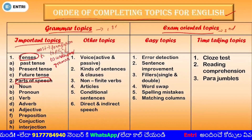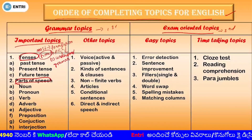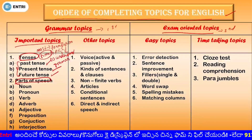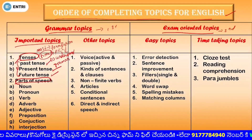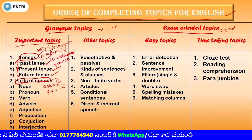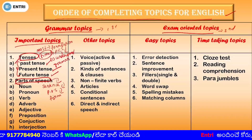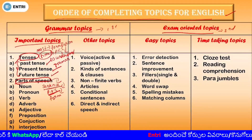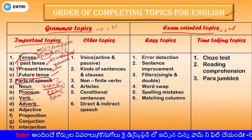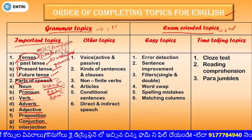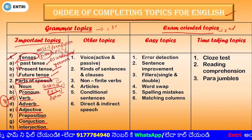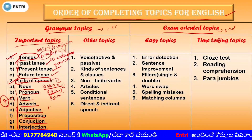Tenses are time-related terms. We have past tense, present tense, and future tense. These three tense-related rules and basics are very important. Next is parts of speech. In any English sentence, every word is a part of speech. Parts of speech are very important. We have noun, pronoun, verb, adverb, adjective, preposition, conjunction, and interjection — eight topics total. Tenses and parts of speech are related concepts and form the foundation of English grammar.